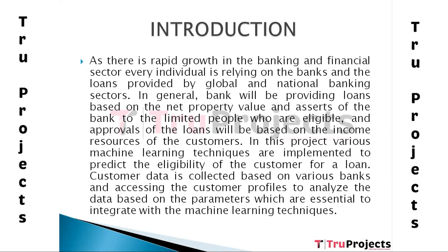Various finance companies deal in all loans and have presence across urban, semi-urban, and rural areas. The customer first applies for a loan, after which the company or bank validates the customer's eligibility. The company wants to automate the loan eligibility process based on customer details provided while filling the application form — details like gender, marital status, education, number of dependents, and applicant income.